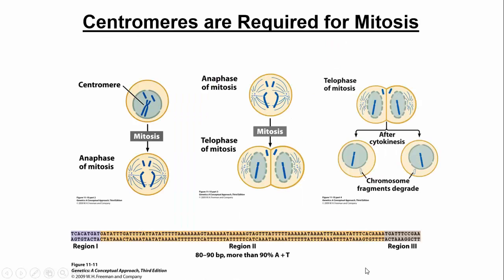Centromeres are very important — they're highly compact sections of DNA, very AT-rich, with a lot of repeating sequences. They're not encoding for genes; they're just places where the spindle apparatus can latch onto during mitosis. If you don't have a centromere, you're in trouble, because you need centromeres for chromosomes to divide properly. Chromosomes without centromeres don't get incorporated into the new nucleus and are eventually lost in the cytoplasm.